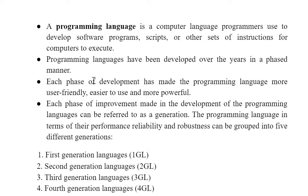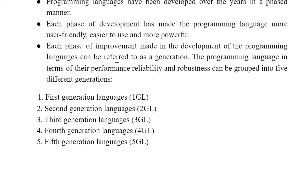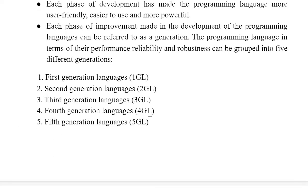We remember using Fortran, Pascal, COBOL, and now we are using Python and PHP. Each phase of development has made a programming language more user friendly — the main aim was to make it more user friendly, closer to human so that they can understand it easily. Each phase of improvement made in the development of programming language can be referred to as a generation. These generations are nothing but versions or improvements of language. The more generations, the more it is closer to human being.